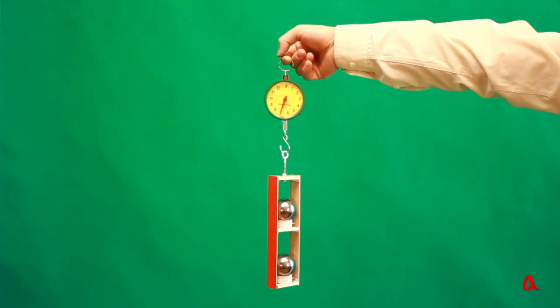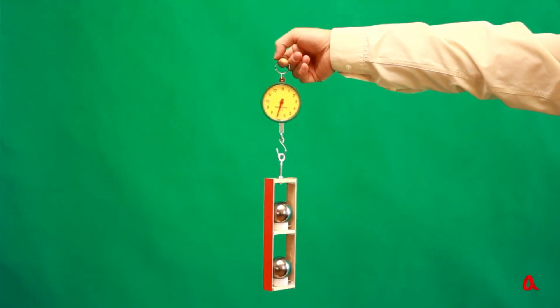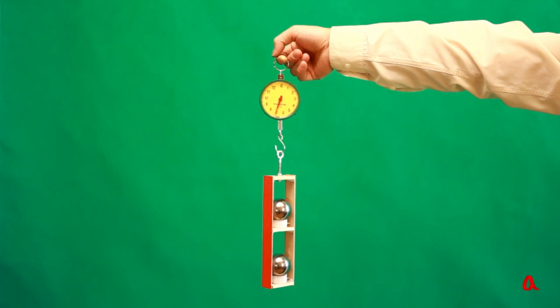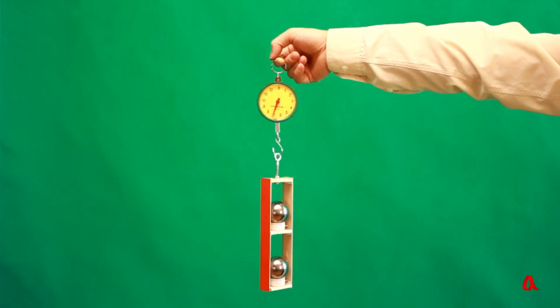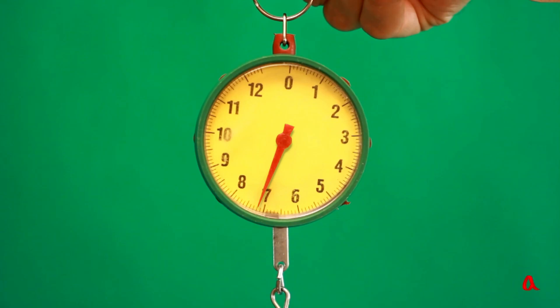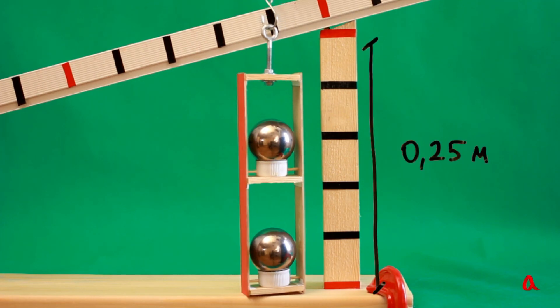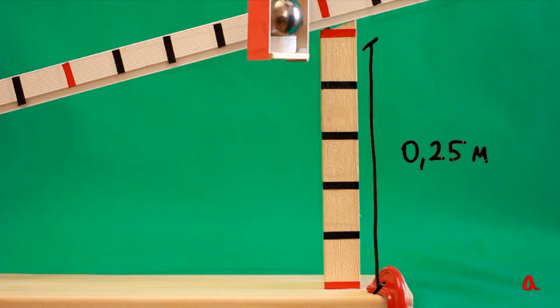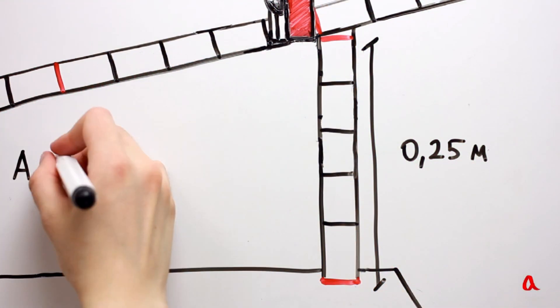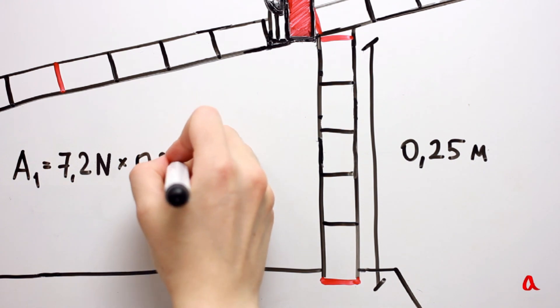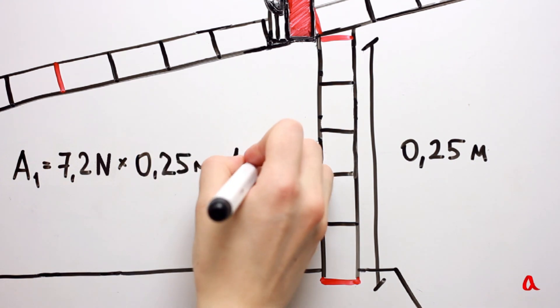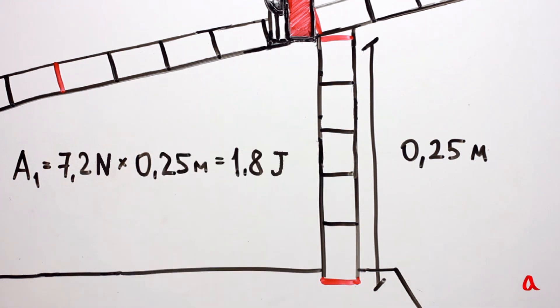Here is a load with two steel balls, which may be lifted along a sloping plane almost with no friction. It weighs 7.2 Newton. We lift it vertically to the height of 25 cm and calculate the work we have done. 7.2 Newton multiplied by 0.25 metre equals 1.8 joule.